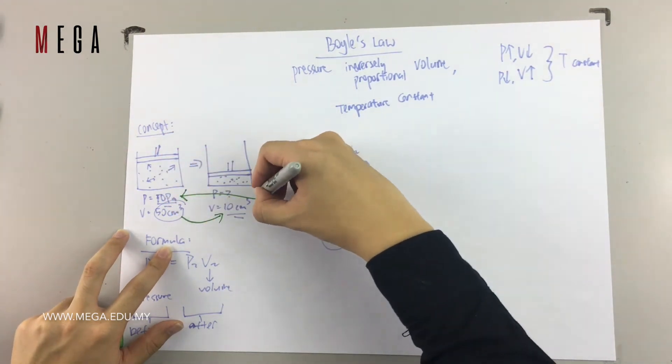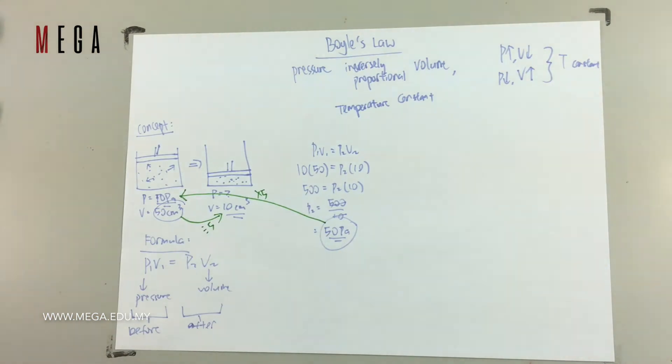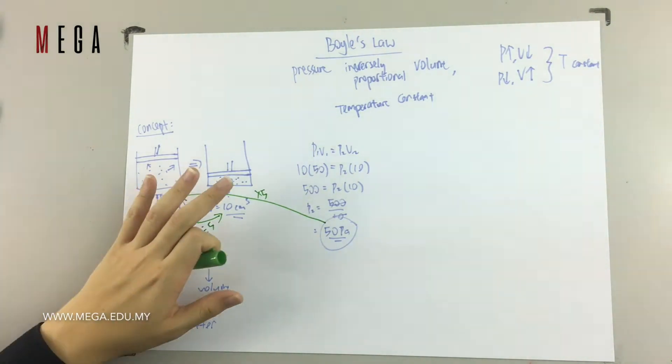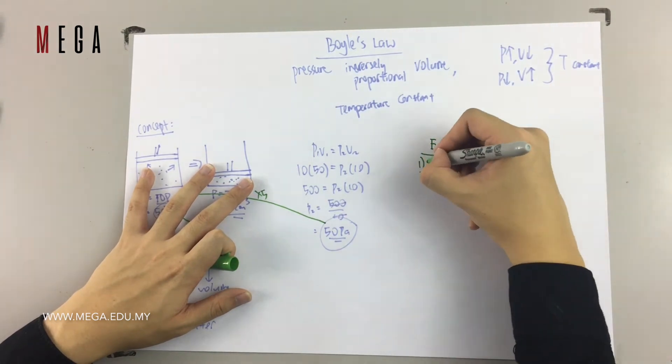From here, we can conclude that your pressure increases when your volume decreases. How much it increases depends on how much it decreases. Like decrease by 5 times, so increase by 5 times.